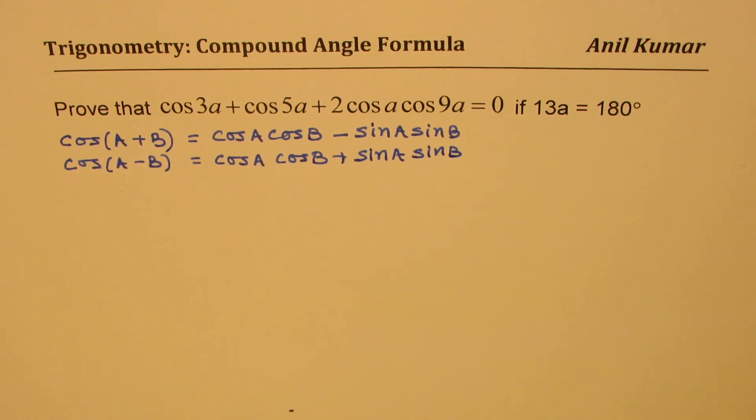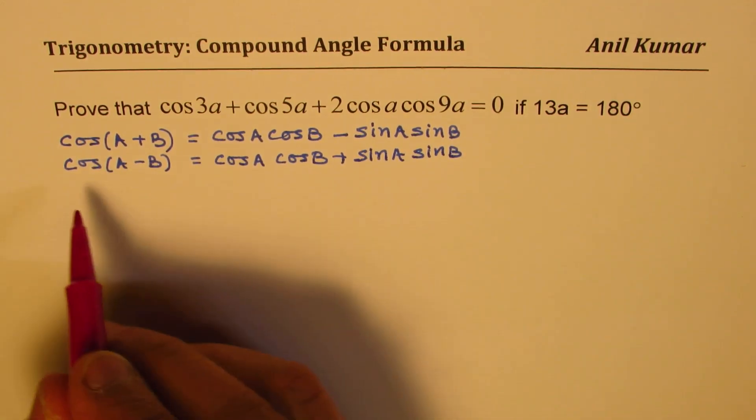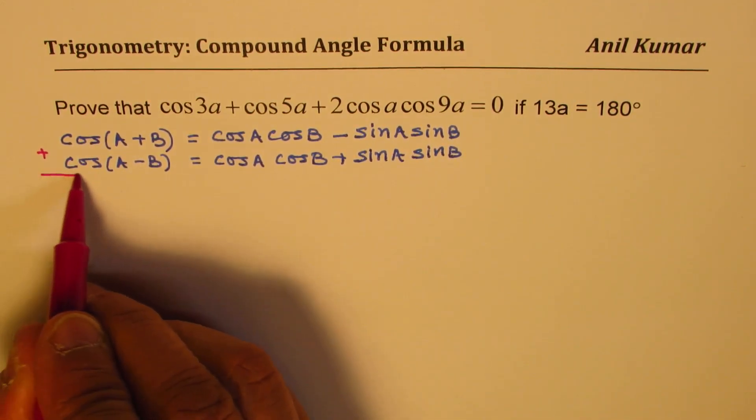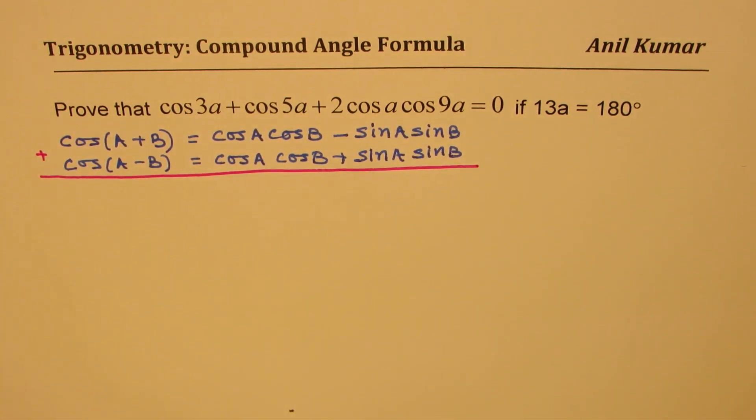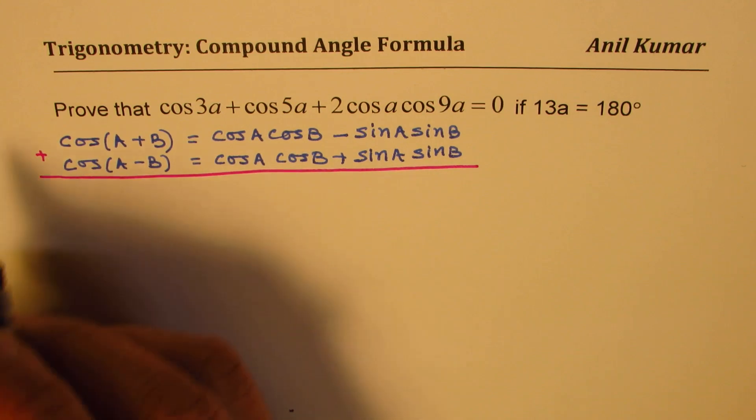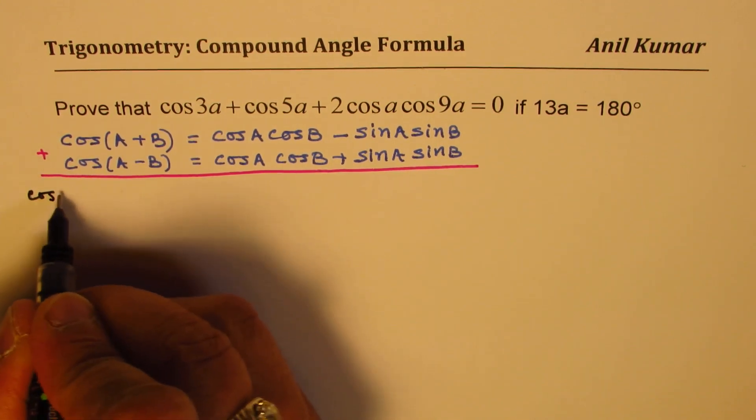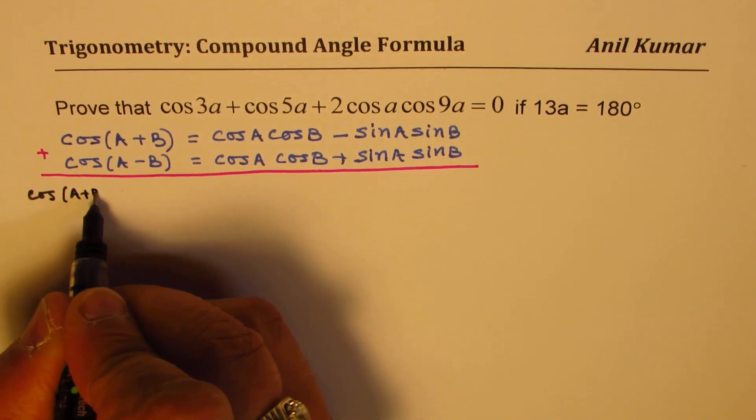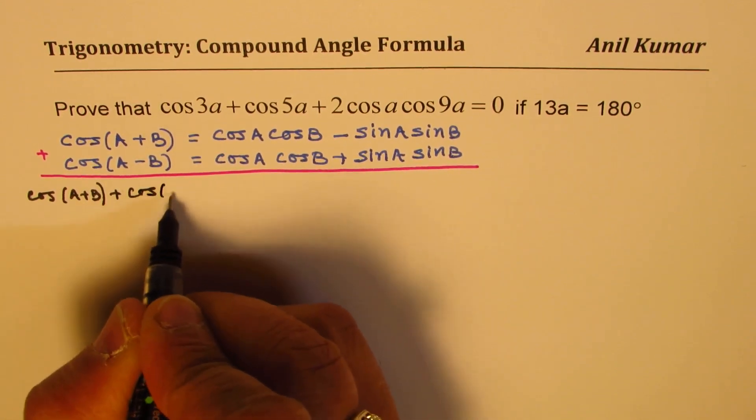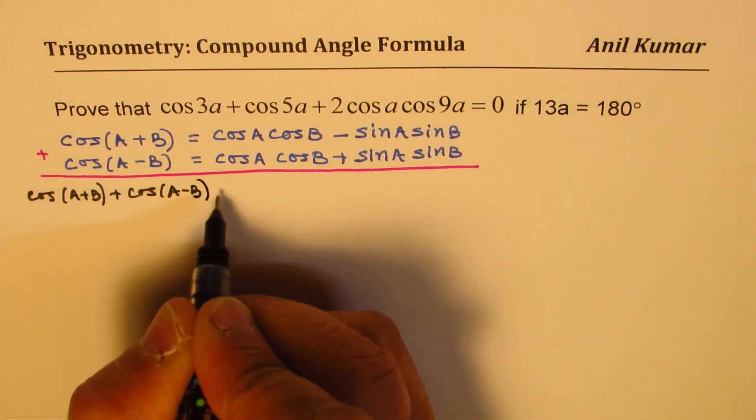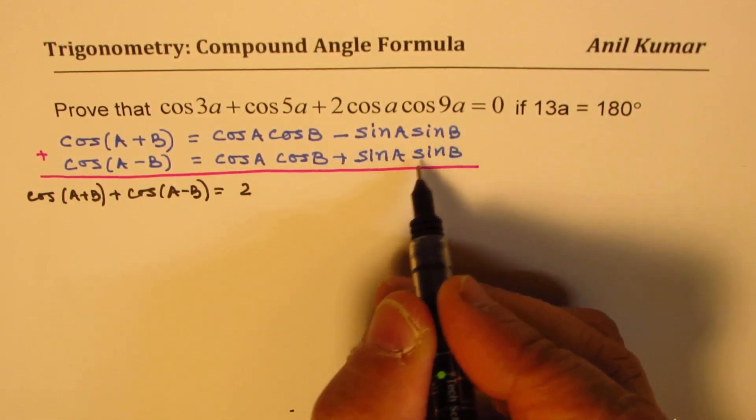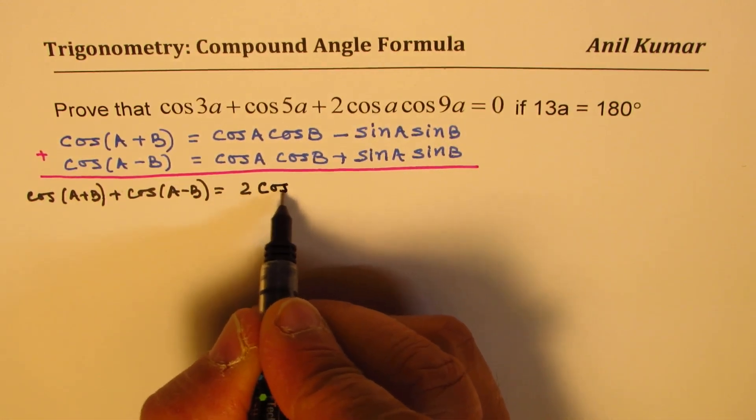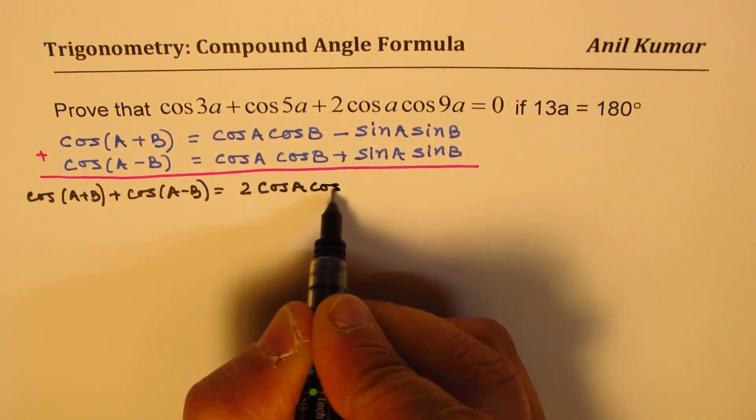And if we add these two, in that case we get a formula which is cos A plus B plus cos of A minus B is equal to twice cos B. These two factors they cancel. So we get twice cos A cos B.